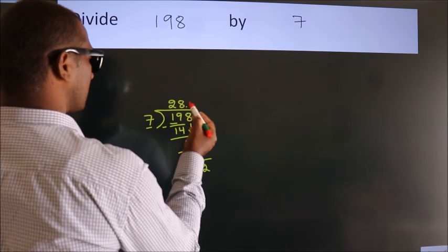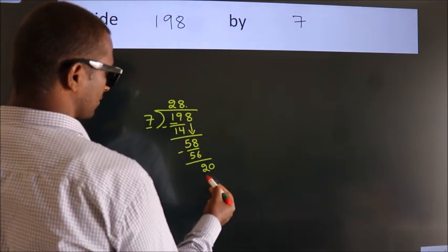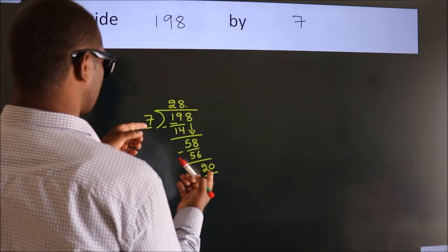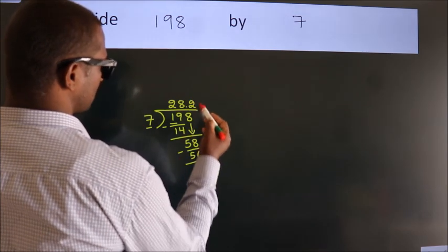So what we do is put a dot and take 0, so 20. A number close to 20 in the 7 table is 7×2=14.